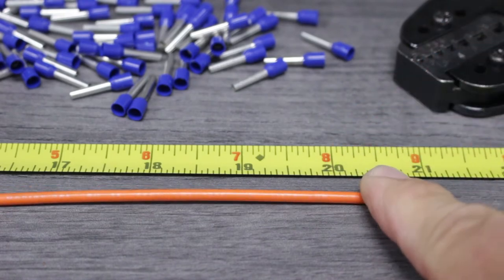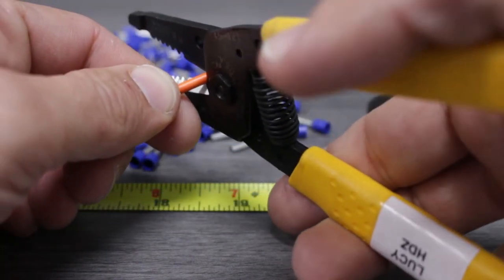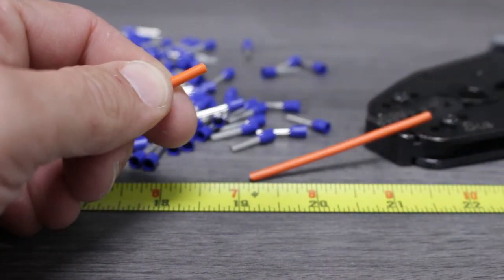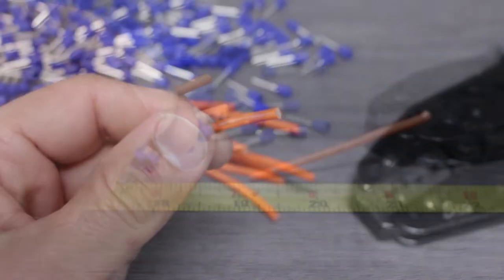We'll start by measuring the wire to the proper length and then cutting it using our compact wire stripper. With our cable cut, we'll move on to stripping the insulation.